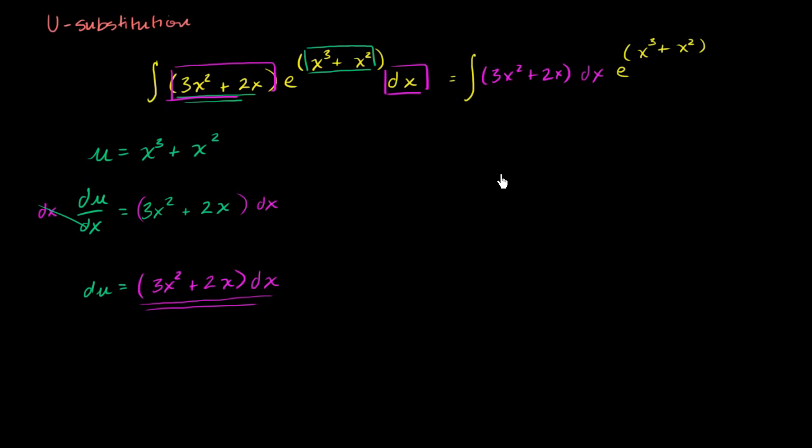Now what's interesting about this? Well, the stuff that I have in magenta here is exactly equal to du. This is exactly equal to du. And then the stuff I have up here, x to the third plus x squared, that is what I set u equal to. That is going to be equal to u. So I can rewrite my entire integral, and now you might recognize why this is going to simplify things a good bit.